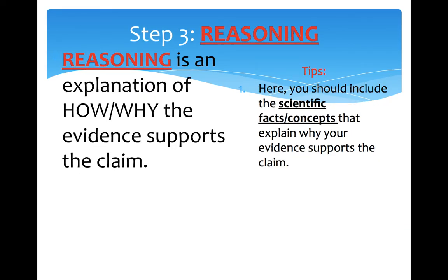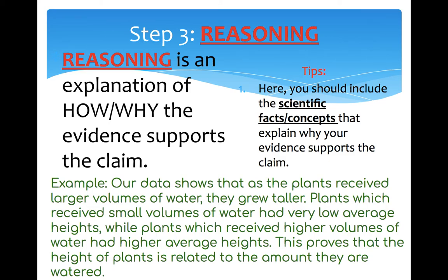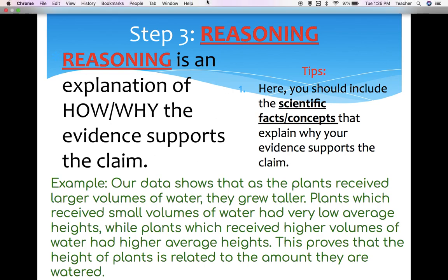The third step, and this is where a lot of people get hung up, is your reasoning section. After your evidence, the numbers don't really mean anything until you give an explanation of how or why that evidence supports or relates back to your claim. This is where you explain how that data and those observations support the claim you made. In this example, we would explain how those data points prove that water is the factor determining how well the plants grow. I would say something like: our data shows that as the plants received larger volumes of water, they grew taller. Plants which received small volumes of water had very low average heights, and plants which received higher volumes had higher average heights. This proves that the height of the plant is related to the amount they are watered. You can see that I didn't restate the evidence — I simply explained how the numbers or observations support the claim made in the argument.